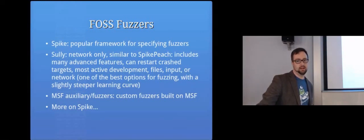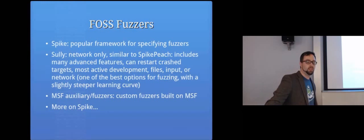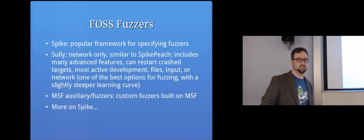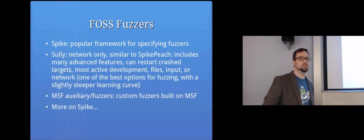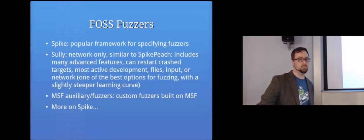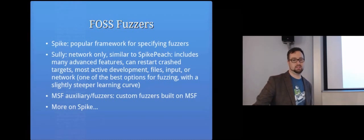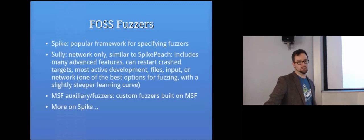Sully only does network only. Peach includes lots of advanced features. Peach is probably one of the best options you can choose, to be honest. It has lots of advanced features. It can actually restart crashed targets. So once your program crashes your testing, it'll restart it automatically. It's the most actively developed of these projects. It can fuzz files or input or network. It just has a bit more of a steeper learning curve than Spike, which is a bit simpler, which is why I use it for the example. But there's no reason you can't use Peach for your assignment.